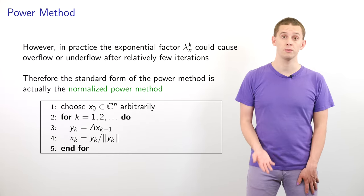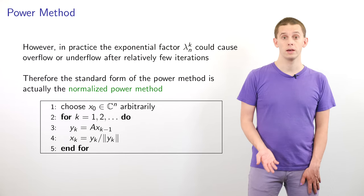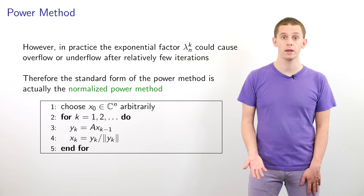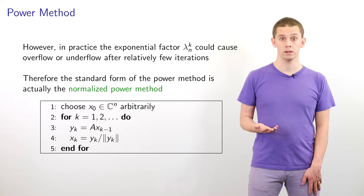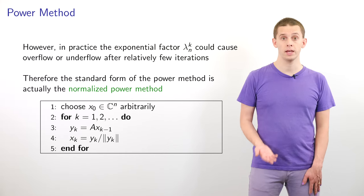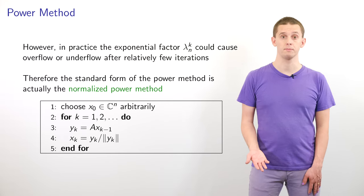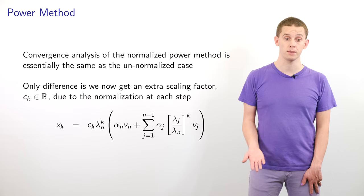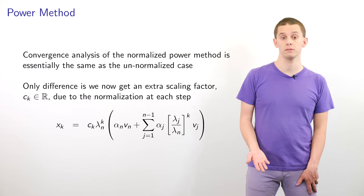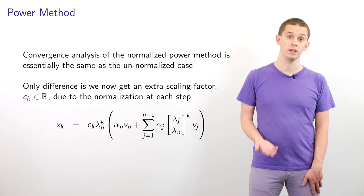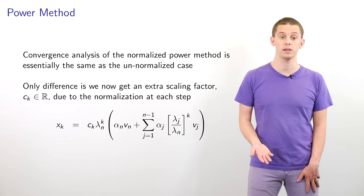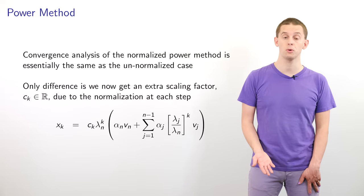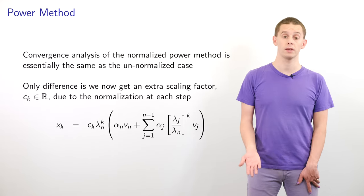Therefore, the standard form is the normalized power method. We again begin with an arbitrary vector x0 and perform iterations for k=1, 2, and so on. In each iteration, we compute y_k as A times x_{k-1}, and then compute x_k by normalizing y_k. The convergence analysis is essentially the same as for the unnormalized method, with an additional normalization factor c_k at each step, so x_k = c_k lambda_n^k (alpha_n v_n + sum terms).